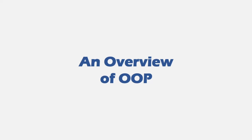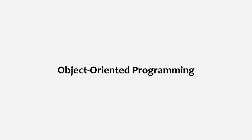Now before we talk about classes and interfaces, let's first understand what object-oriented programming is. Because in order to understand classes and interfaces, it's important to understand what object-oriented programming is. In object-oriented programming, we define real-life entities in the form of an object.